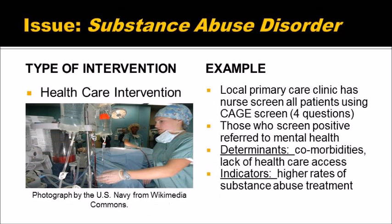A good example of a healthcare-level intervention for substance abuse disorder is screening at a local primary care clinic. For example, the CAID screen is four yes-no questions. Anybody who answers yes to any of the questions is at high risk for alcoholism, and they can be referred to mental health services. Determinants that could be affected are comorbidities and lack of healthcare access, and indicators are higher rates of substance abuse treatment.